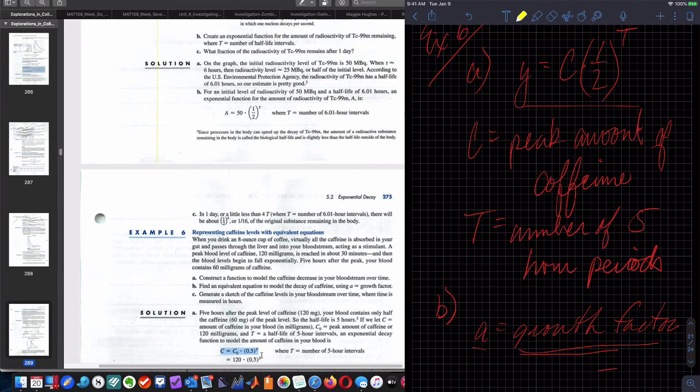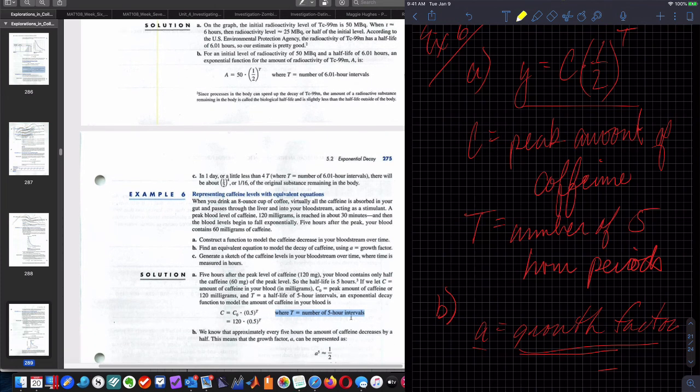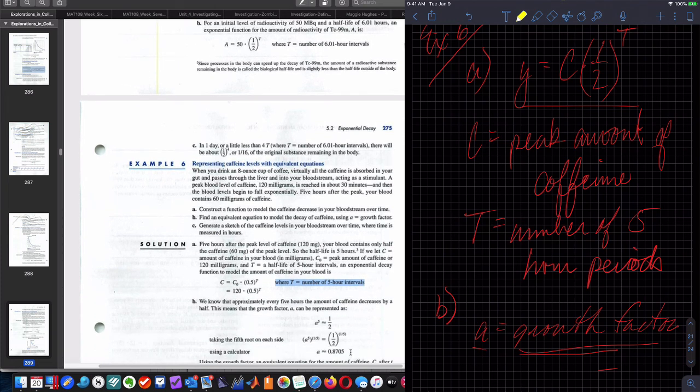C, one-half, T. 120 is our starting amount. And we defined what T represents. Number five hour intervals. I say time periods. Either or. We got the same answer they got here for our A, and they've used the same methodology that I've demonstrated to you.